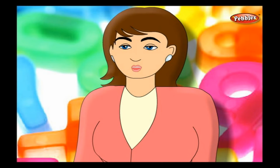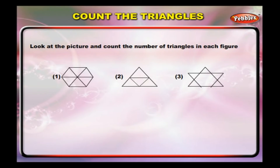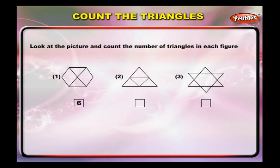Let us do some examples based on the shapes. Look at the picture and count the number of triangles in each figure. In figure one, we have six triangles. In figure two, we have five triangles. In figure three, we have eight triangles.